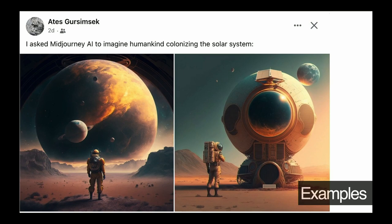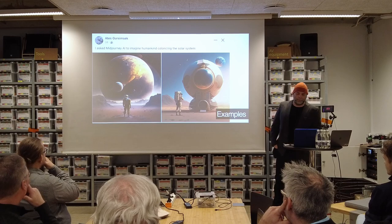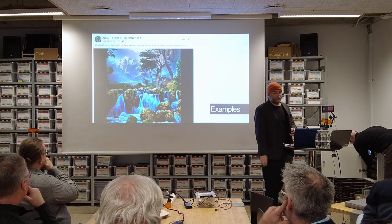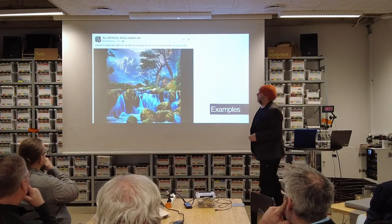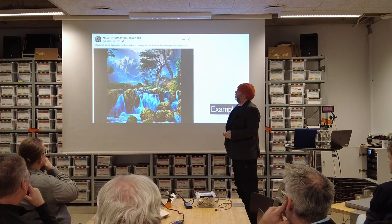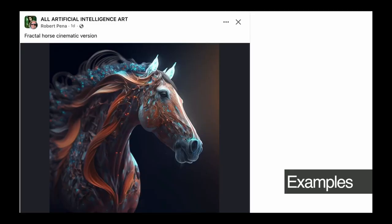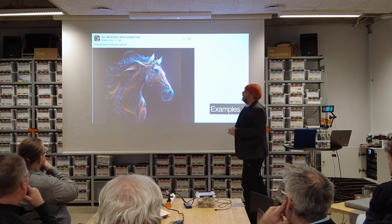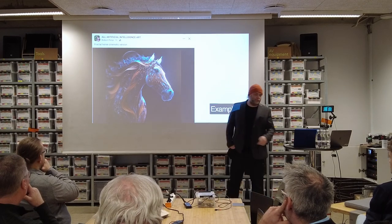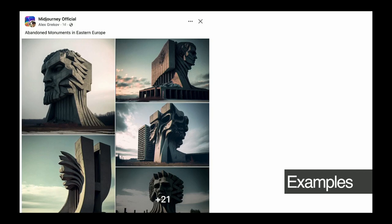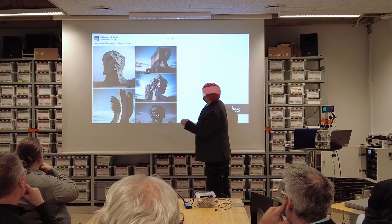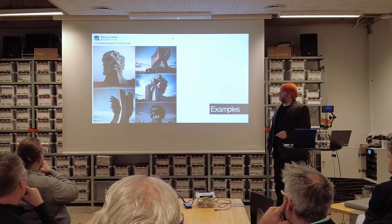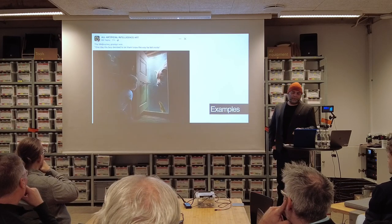He asked 'how might colonizing the solar system look?' — and this is just the AI dreaming and synthesizing stuff. Ates does not have control of what it does. These AI generators are also very good at things you wouldn't imagine — things so detailed you wouldn't have time to draw them, things that kind of look like something that exists but don't. This is it dreaming up abandoned monuments in Eastern Europe — it's got the brutalist style completely right, but these things don't exist. They are completely dreamed up by the AI.